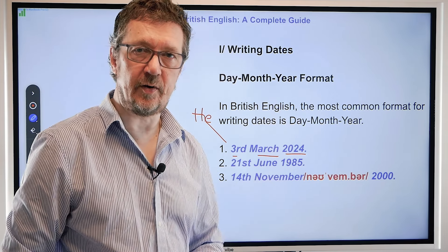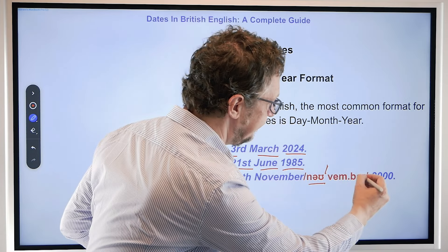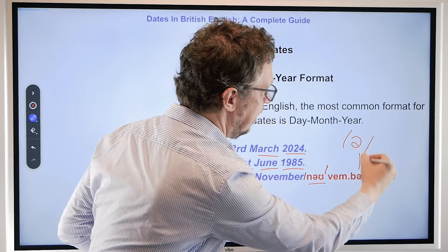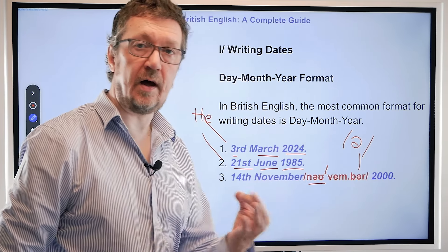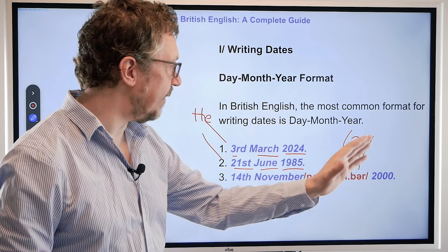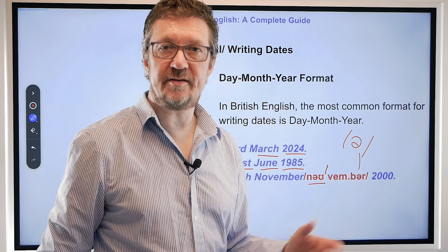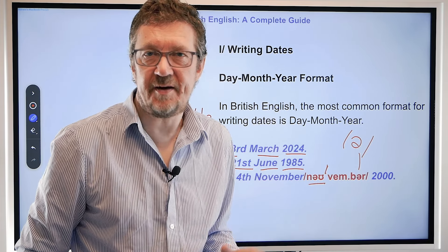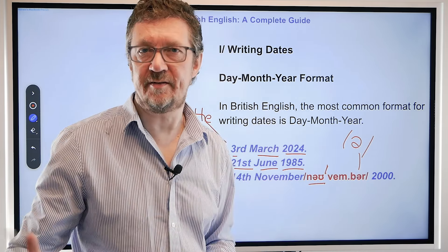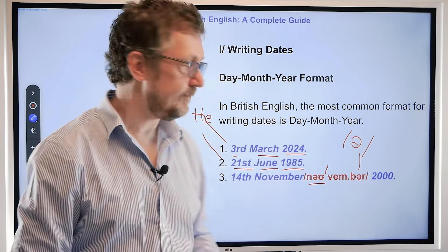14th of November — let's just have a look at the pronunciation. So the O sound, and then the stress in V: 'Vem'. November. And this is our schwa. November. 2000 — year 2000, we don't say 'twenty-oh-oh', we say 'two thousand'. Again, when we say it: 'the 14th of November 2000'.